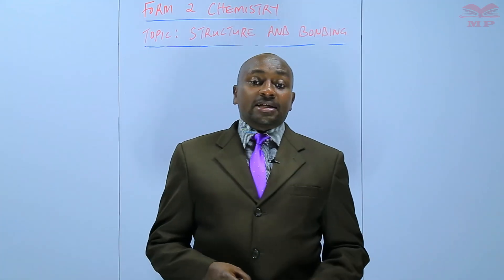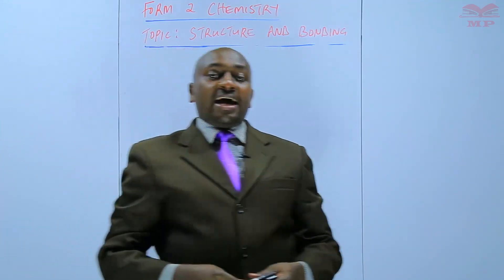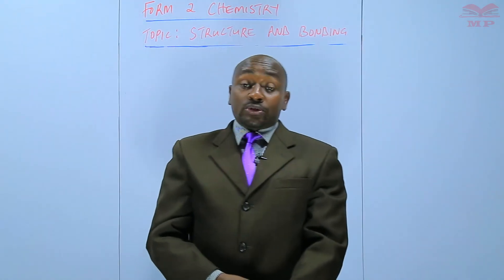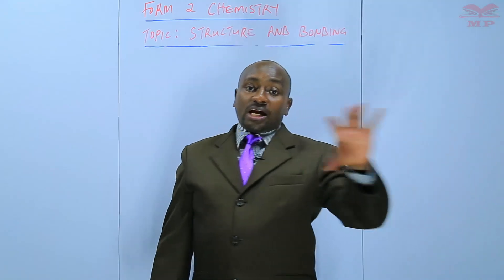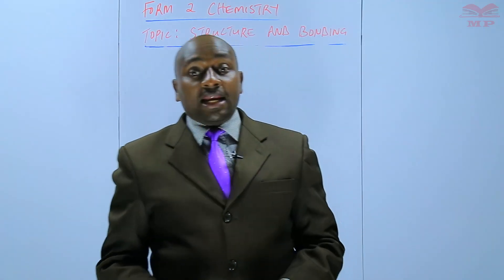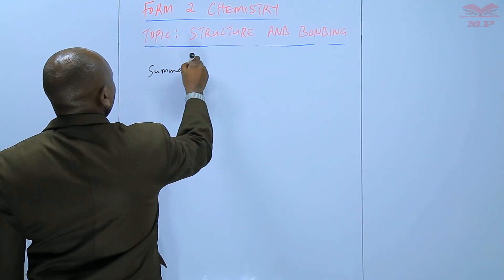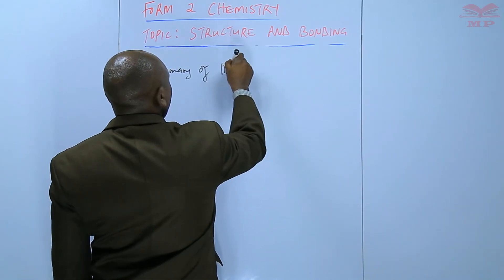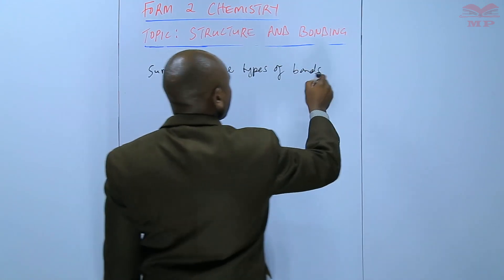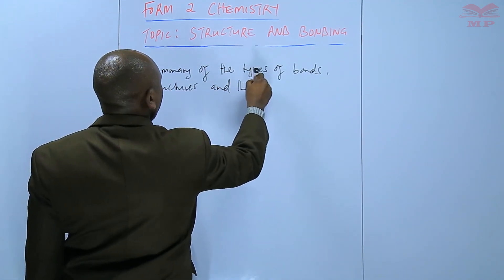Lastly, we discussed the types of bonds across period 3, whereby we saw that when you go across period 3, there are changes in the types of bonds that are formed. We have those elements with metallic properties, so they have metallic bonds, and those that are non-metallic, and therefore they have covalent bonds. So we're going to have a summary of the types of bonds, structures, and their characteristics.